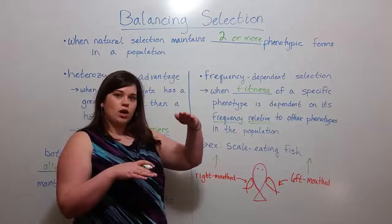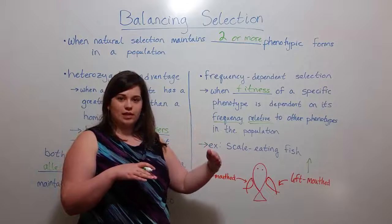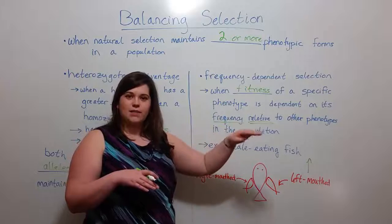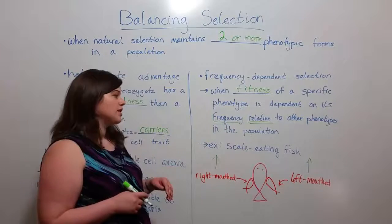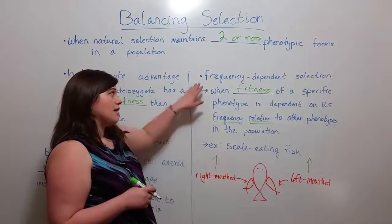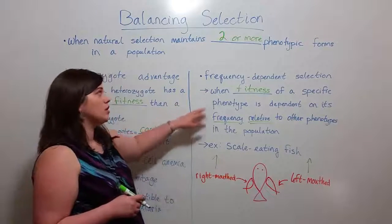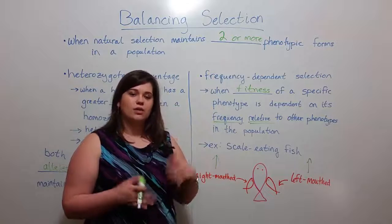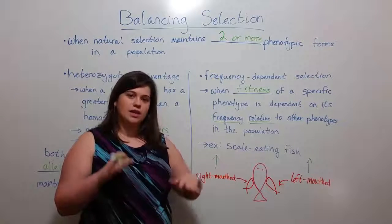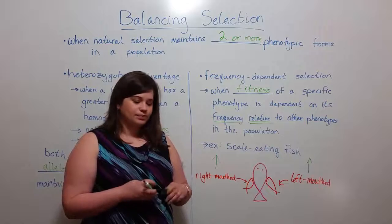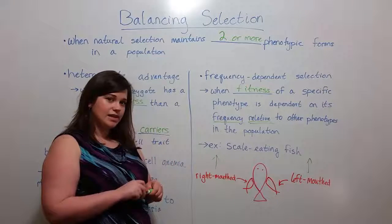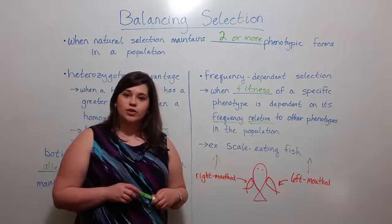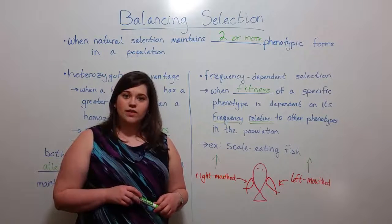When one form starts to become more common, it will be a little less common in the next generation, then more, then less — they oscillate back and forth, but right around the 50 percent mark, because of the frequency-dependent selection resulting in the maintenance of both forms at relatively stable frequencies around 50 percent in the population. So that is it for today's video on balancing selection. I hope you learned a lot, and thanks for watching Biology Professor.